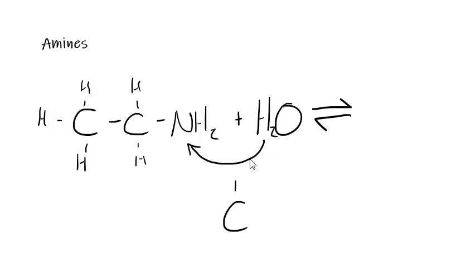...is C, CH3. I'm just drawing the products down here because I've run out of room, H, H. And because it's gained a hydrogen ion, we're now going to have NH3 plus. So this would be ethyl ammonium.